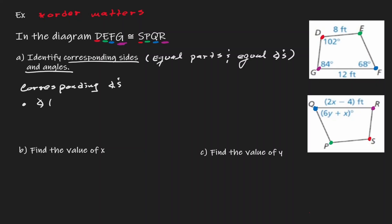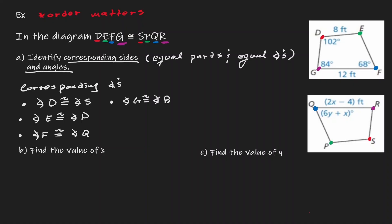Angle D is congruent to angle S. Angle E is congruent to angle P. Angle F is congruent to angle Q. And lastly, angle G is congruent to angle R.